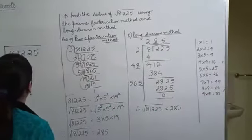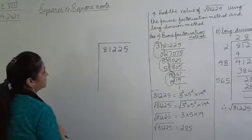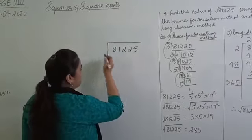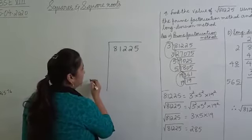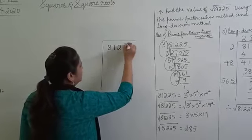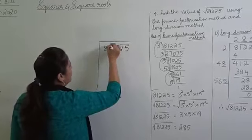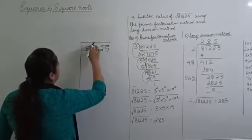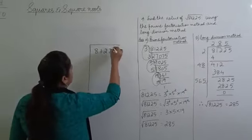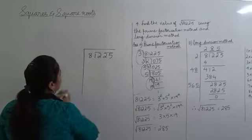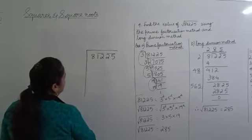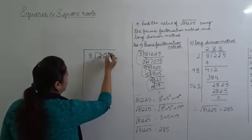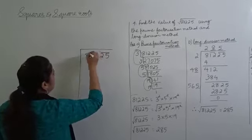First write out the number 81,225 in the long division format. Now pair the digits from behind: 25 makes a pair, 12 makes a pair, and 8 stands alone. So from behind: 25 is one pair, 12 is one pair, and 8 stands by itself.